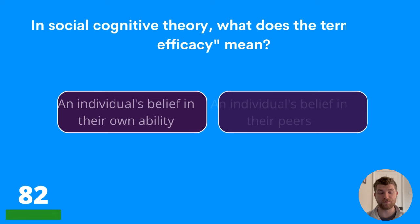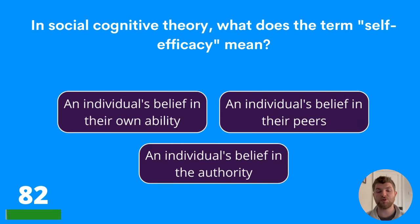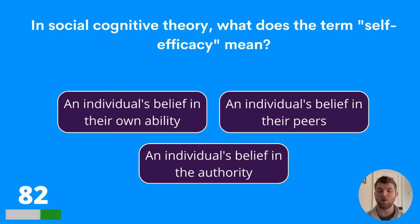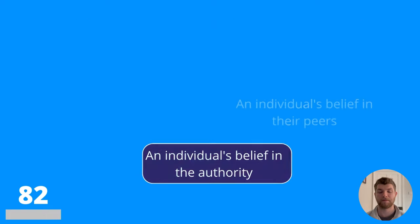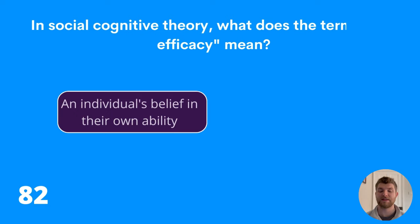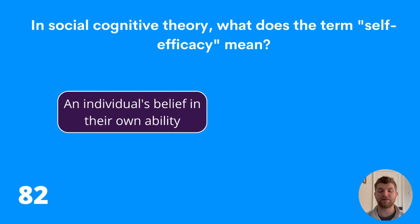Question eighty-two: in social cognitive theory, what does the term self-efficacy mean? An individual's belief in their own ability, an individual's belief in their peers, or an individual's belief in the authority? The answer is an individual's belief in their own ability.